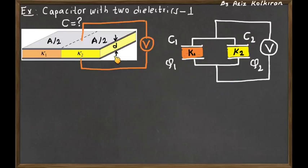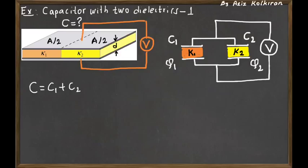Instead of one big capacitor with area A, we have two different capacitors each with half the area of the previous one, and they are connected in parallel to each other. For this configuration, the potential difference between the plates for each capacitor will be the same, V. From the rules for parallel-connected capacitors, the equivalent capacitance is the sum of C1 and C2.